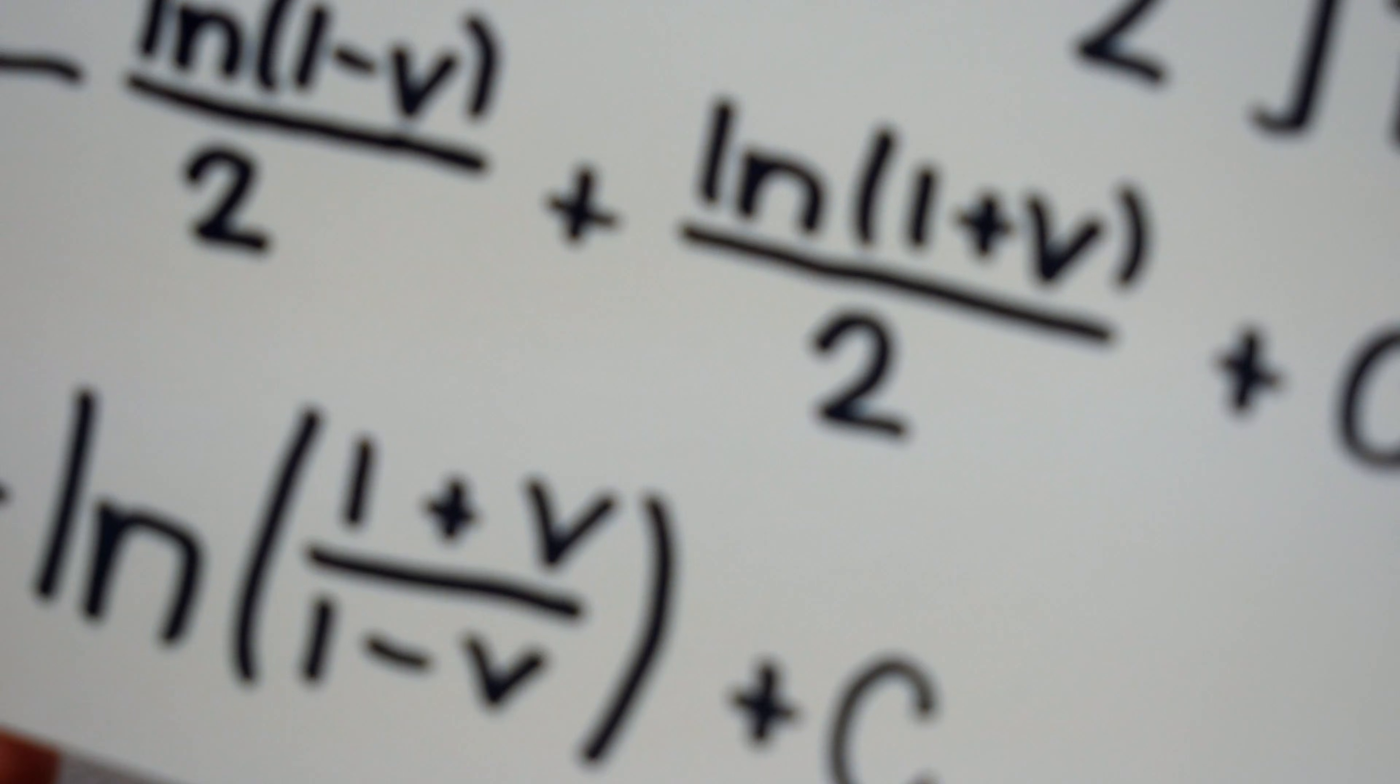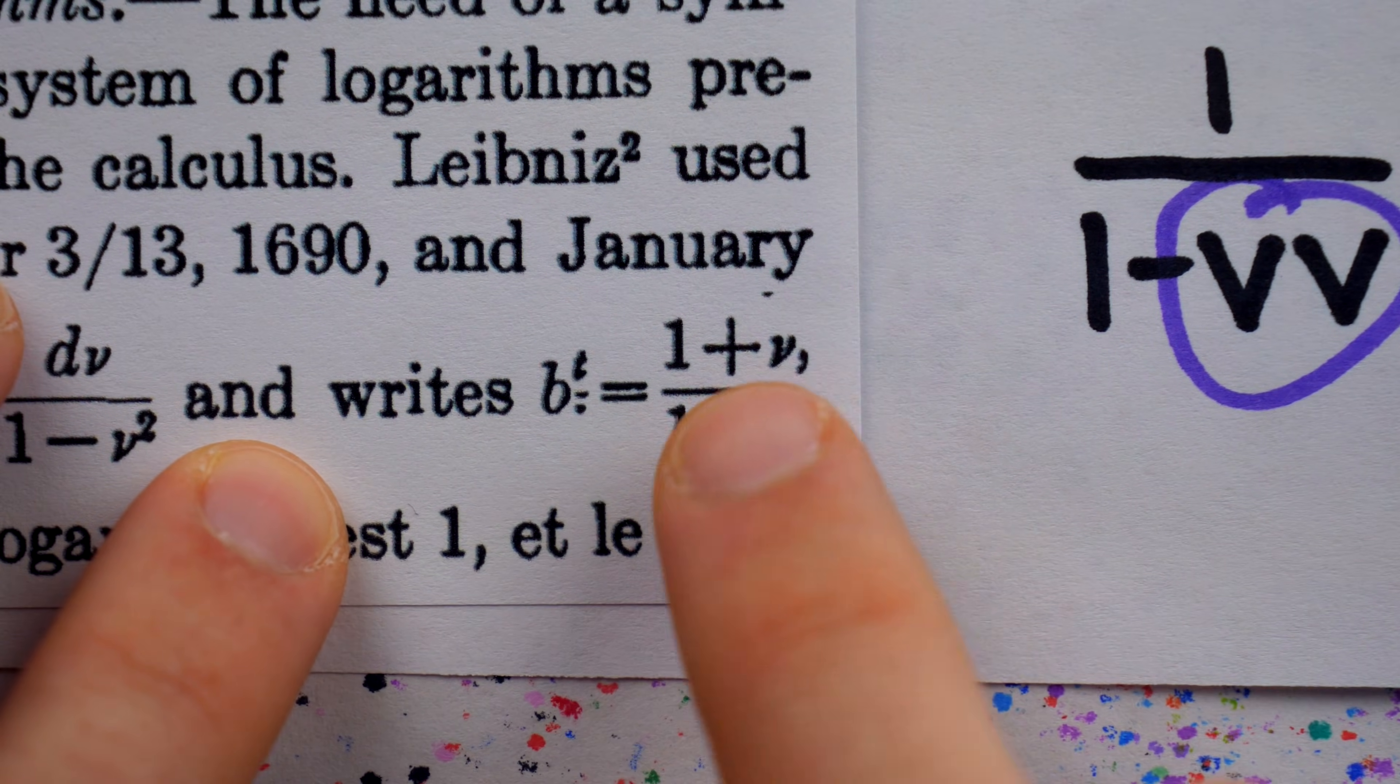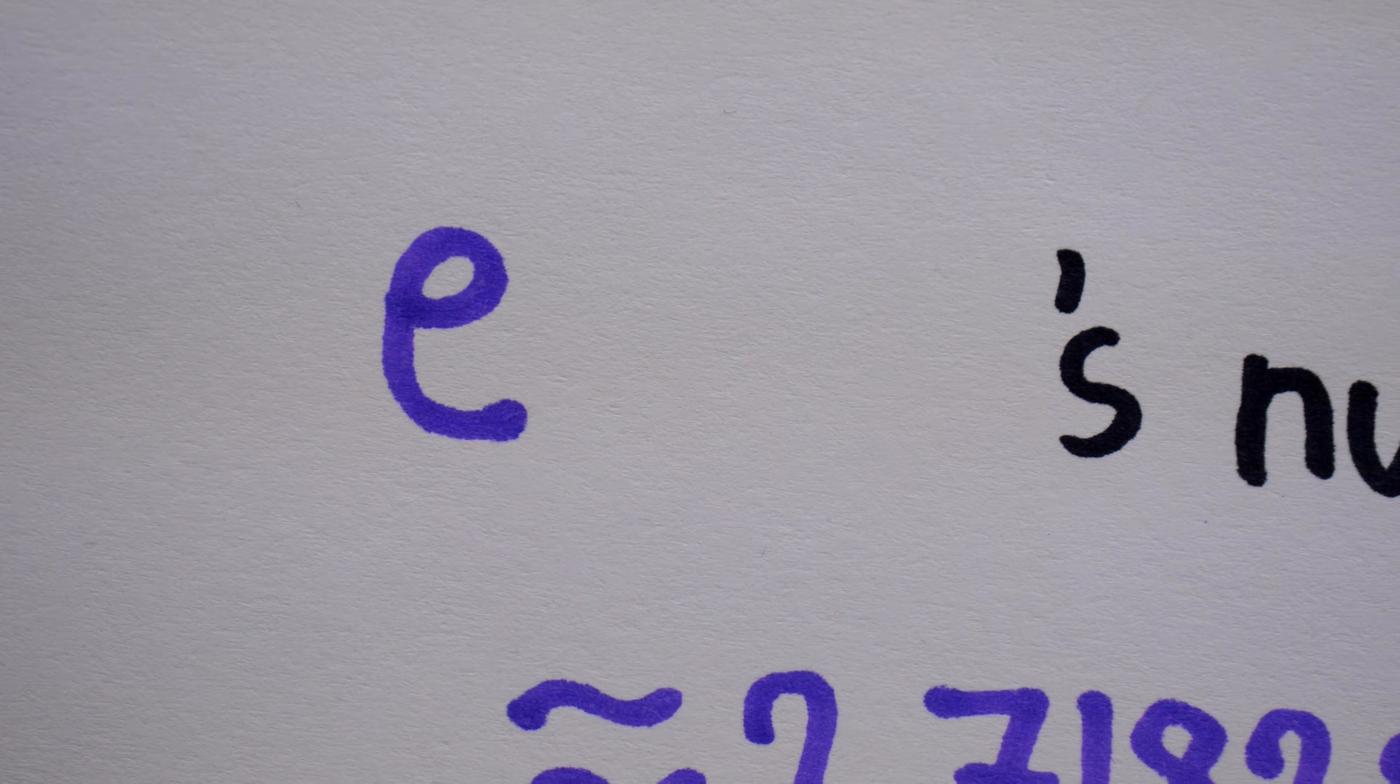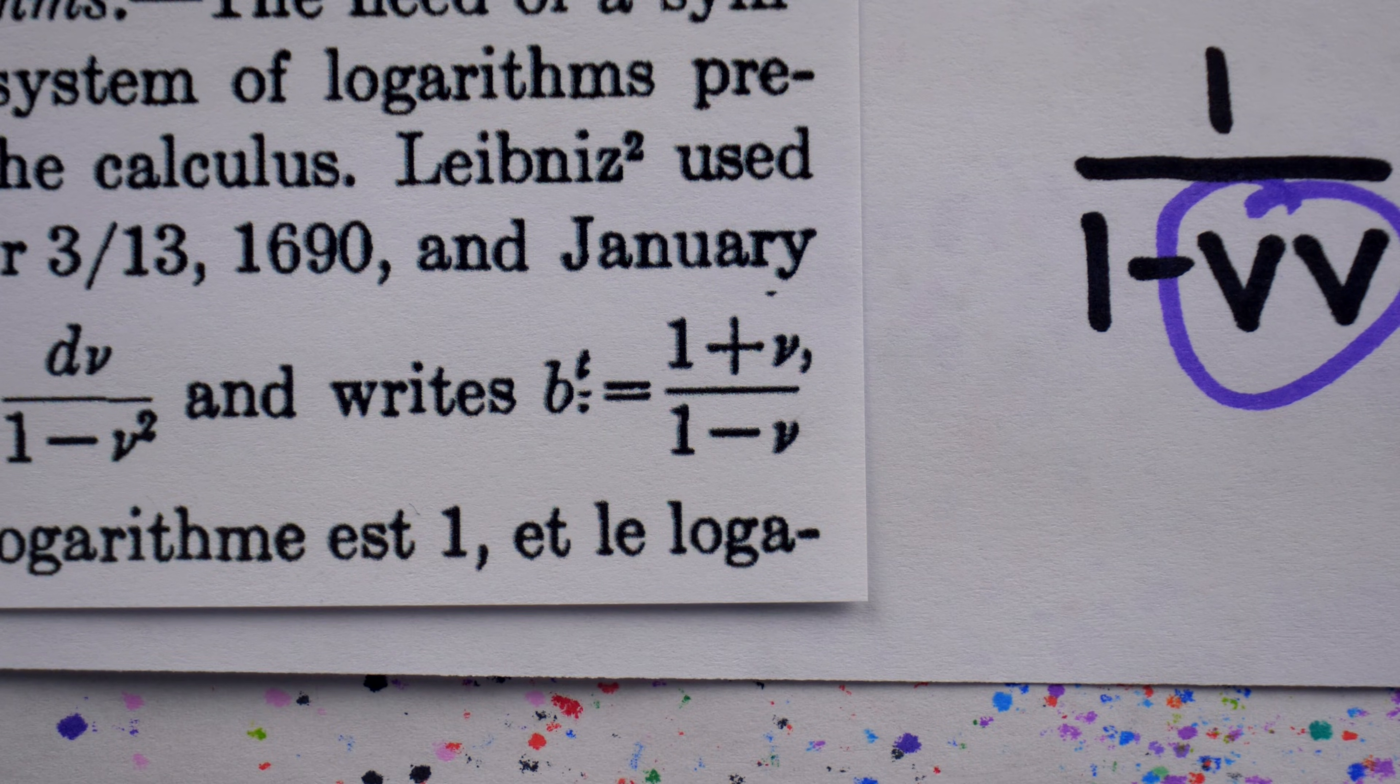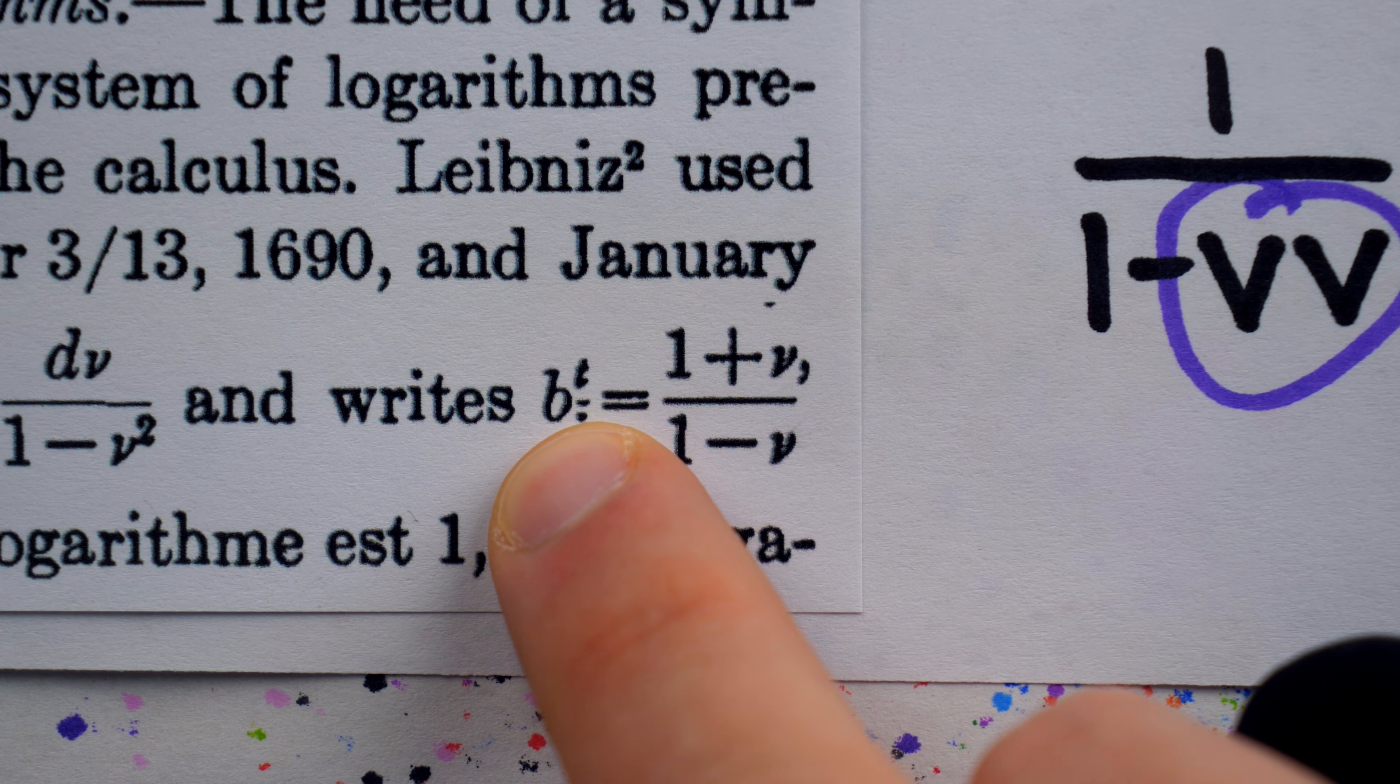Now, what base b could cancel out with the natural logarithm to leave behind the argument? The number e, of course. So here we see the first use of a single symbol for this number. Leibniz uses b for base.